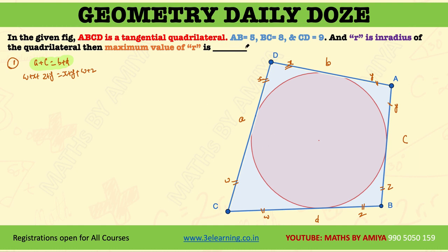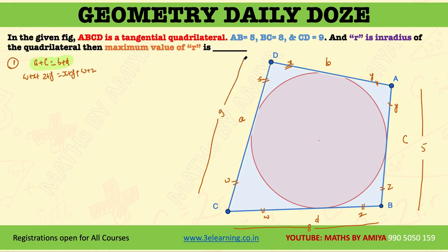We know this. So what do we have? AB has complete length of 5 units. BC length is 8 units. CD length is 9 units. By the tangential sum-of-sides formula, the summation of AB plus CD is 5 plus 9 equals 14. So we can say DA is nothing but 6, to make BC plus DA also equal to 14.